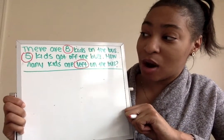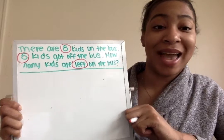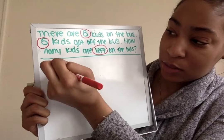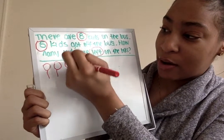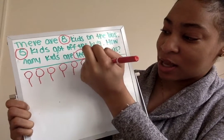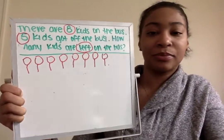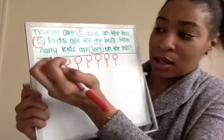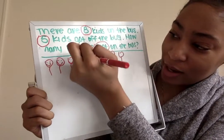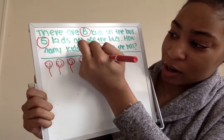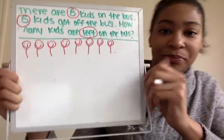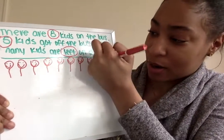So now we need to go in and draw our picture. The first thing I'm going to draw is eight kids: 1, 2, 3, 4, 5, 6, 7, 8. Now let's go back and make sure we have eight kids on our bus: 1, 2, 3, 4, 5, 6, 7, 8. And I'm going to put the number eight. You all know I'm not a good drawer, but I tried today.